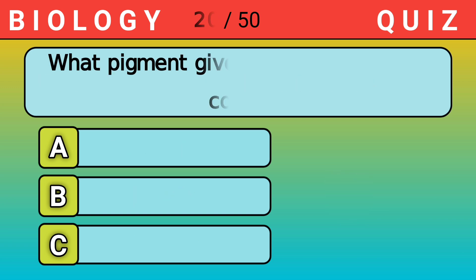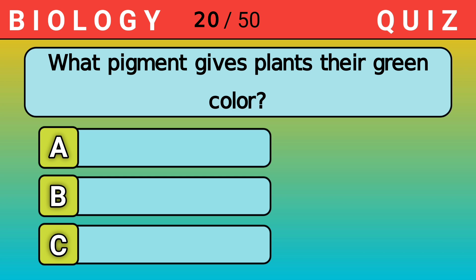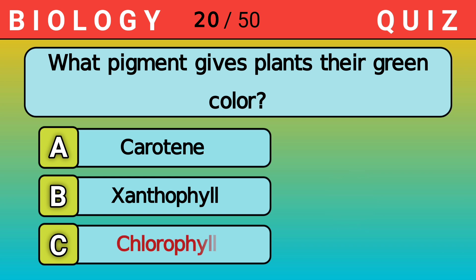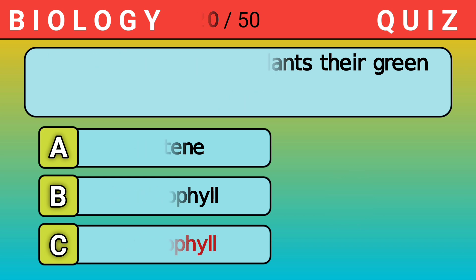What pigment gives plants their green color? Answer C. Chlorophyll.